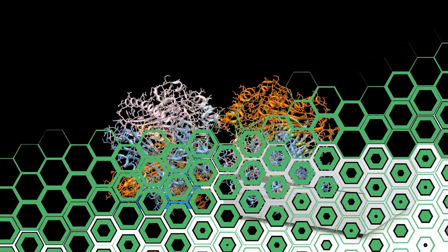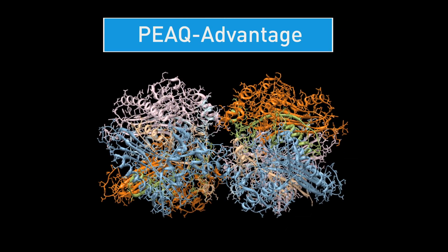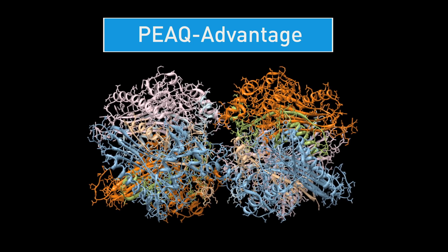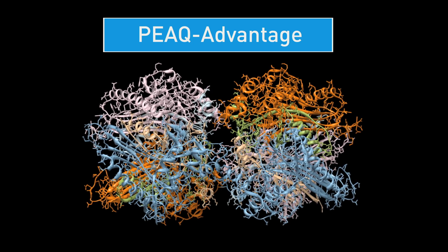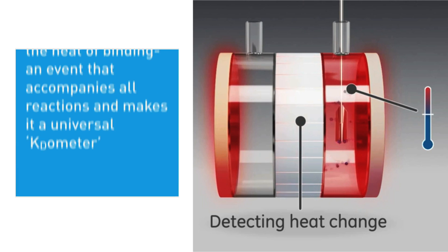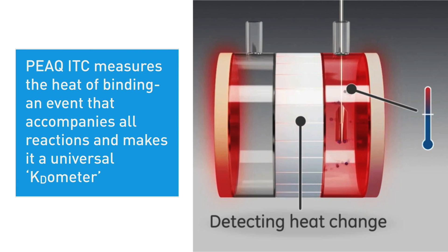The final element is peak advantage. ITC can measure the interaction between molecules that competitive technologies cannot. Peak ITC measures the heat of binding, an event that accompanies all reactions, making it a universal calorimeter. Other technologies will miss many protein-protein, protein-small molecule, and protein-nucleic acid interactions.